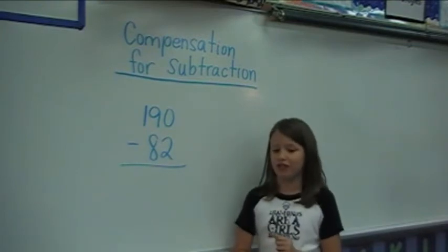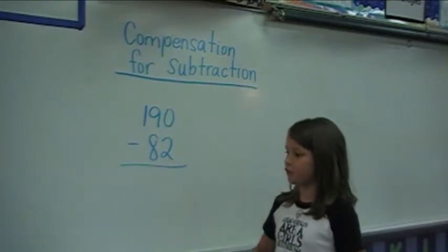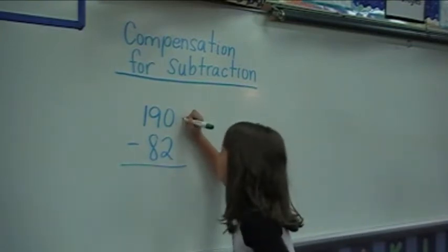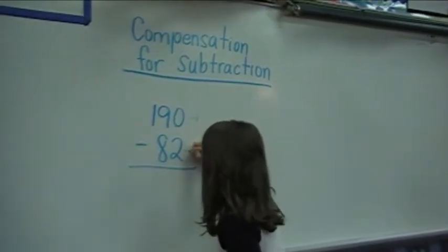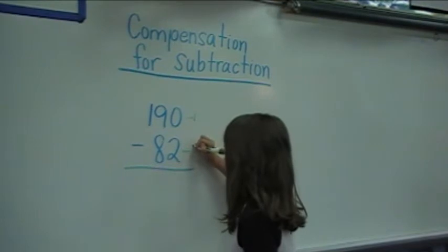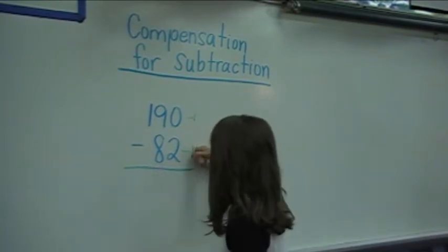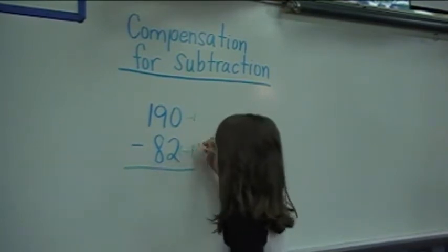I'm going to be doing compensation for subtraction, and I will be subtracting one from one hundred and ninety and one from eighty-two to keep the distance the same.